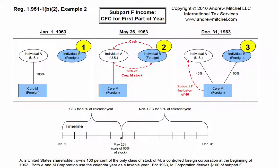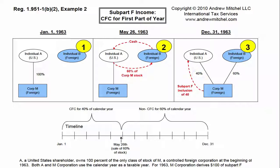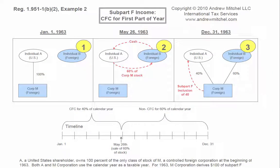Note that the 40% for the pro-rata share is derived from the number of days that Corp. M was a CFC, and not from the percentage ownership retained by Individual A. The pro-rata Subpart F income for Individual A would still be $40 even if A had sold 100% of the shares of Corp. M.